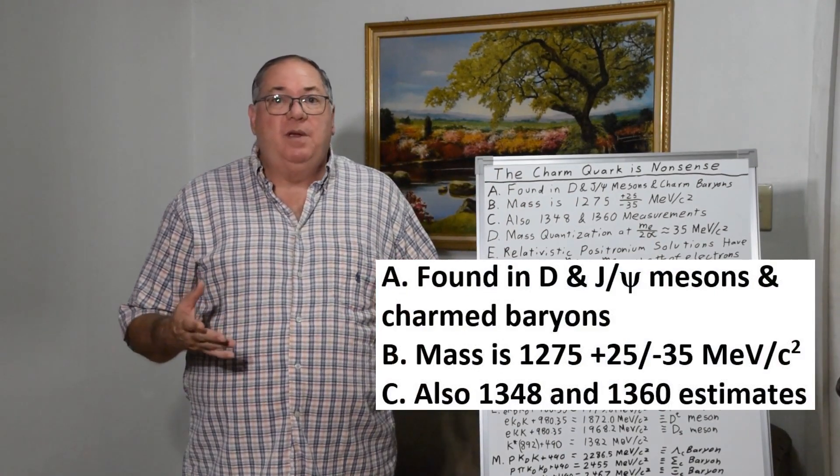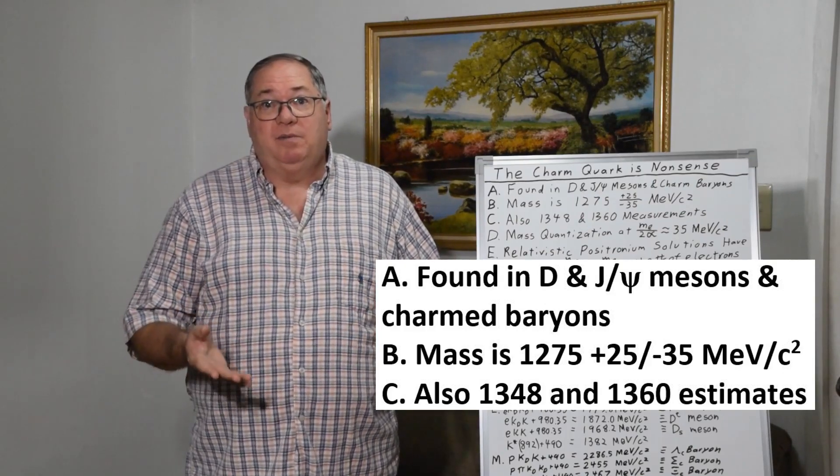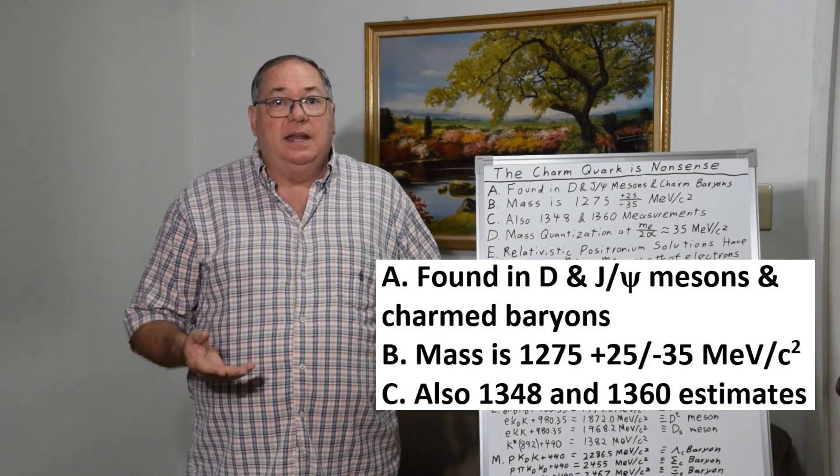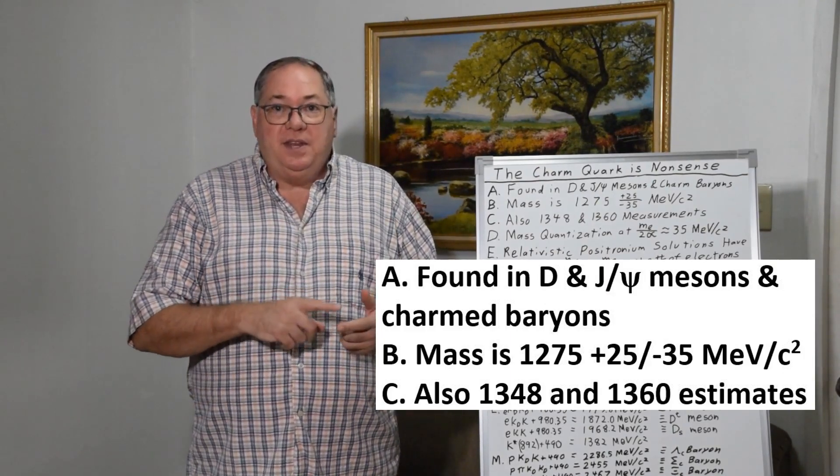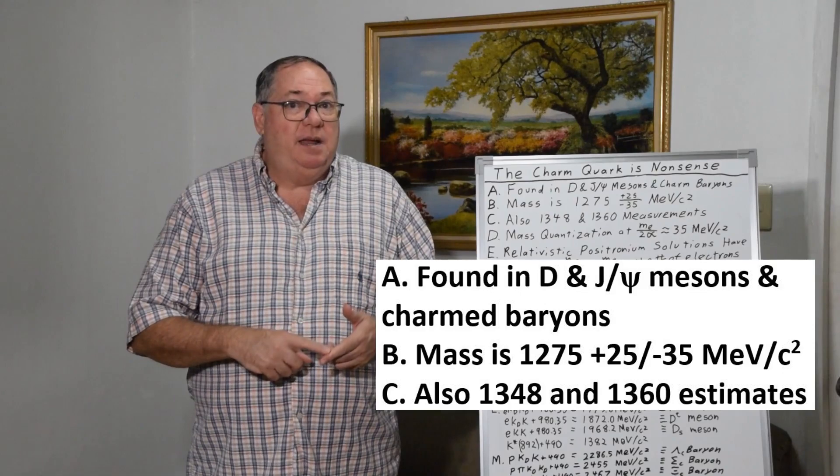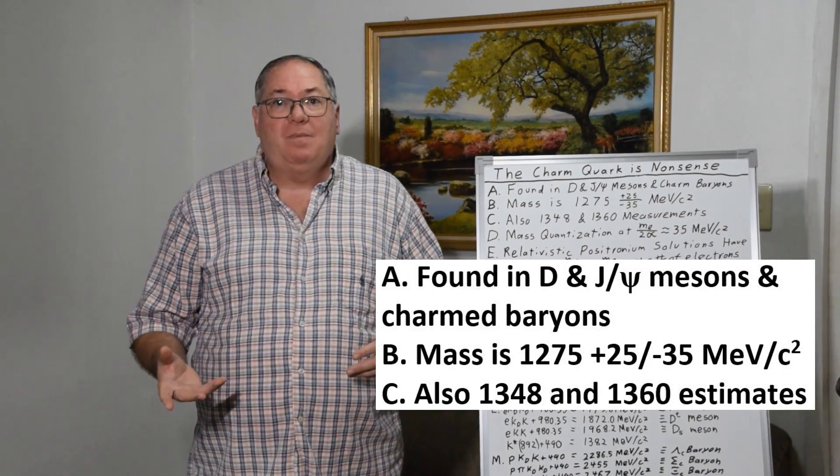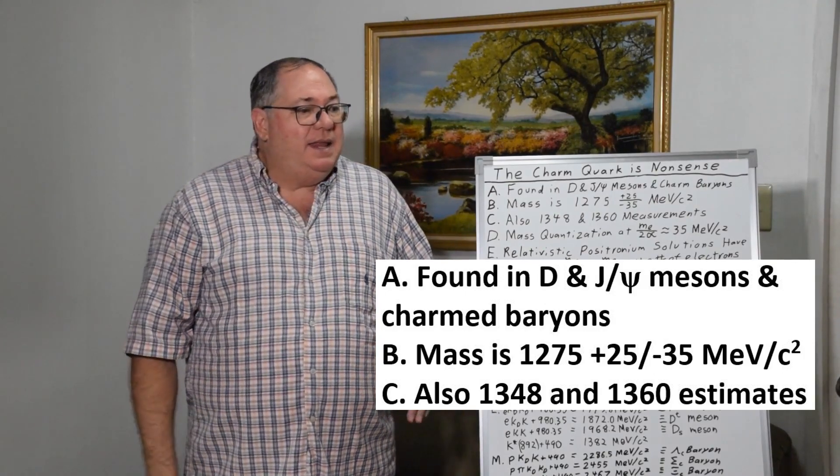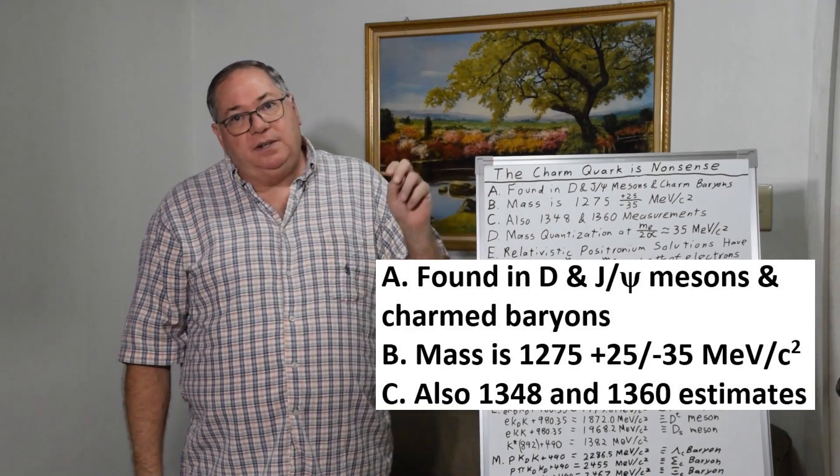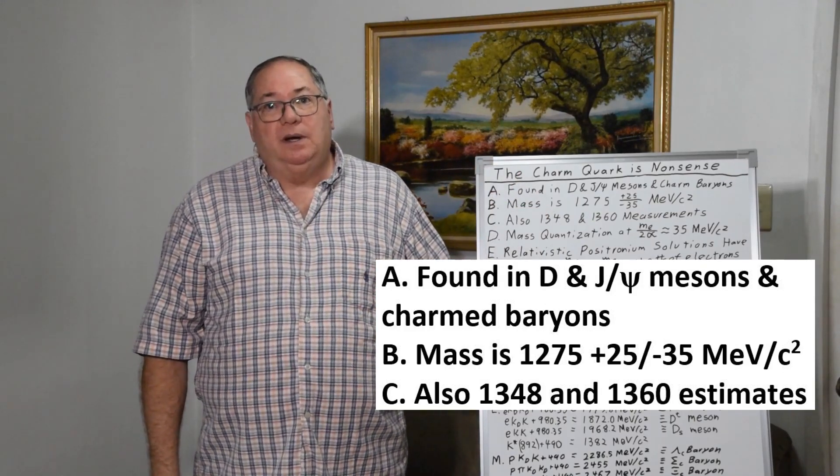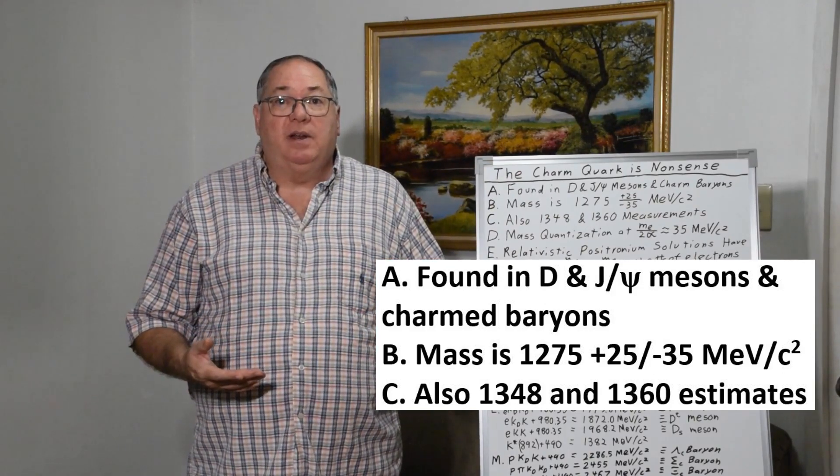Now, if you're not familiar with the charm quarks, there's some particles or resonances, as I prefer to call them, that are supposed to contain the charm quark. They're the D mesons and the J/psi mesons, and also the charmed baryons. The estimate I mentioned is 1,275 MeV/c² plus 25 minus 35, so it's not known very accurately.